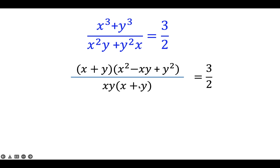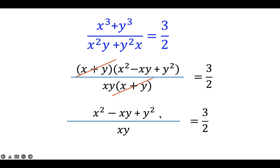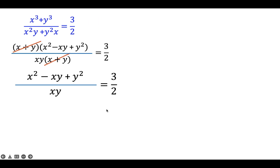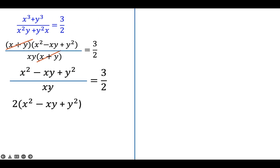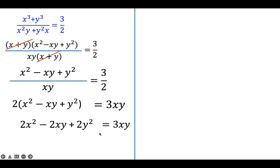The factor (X plus Y) in the numerator and denominator cancels out. This gives us (X squared minus XY plus Y squared) over XY equals 3 halves. By cross multiplication: 2 times (X squared minus XY plus Y squared) equals 3 times XY. Distributing the 2, and combining like terms minus 2XY and plus 3XY, we arrive at 2X squared minus 5XY plus 2Y squared equals 0.